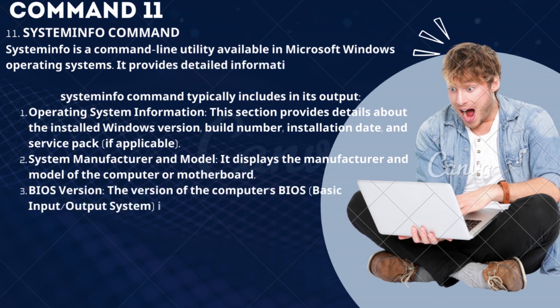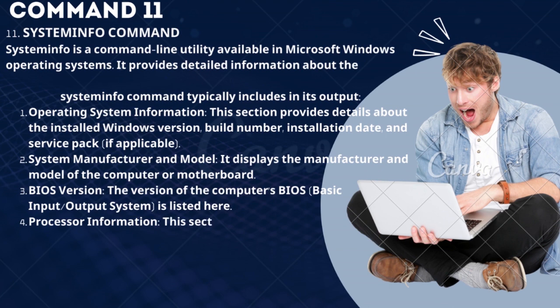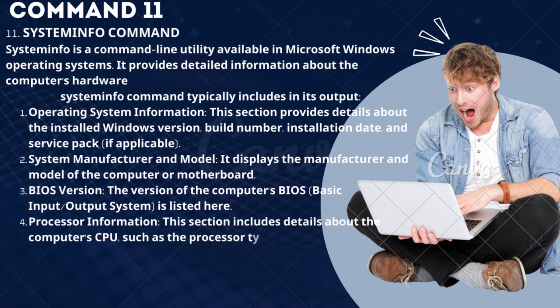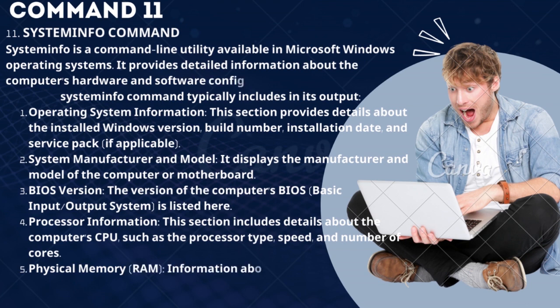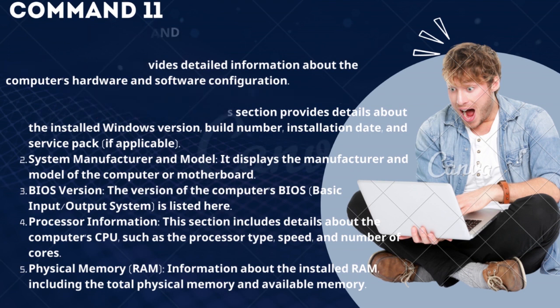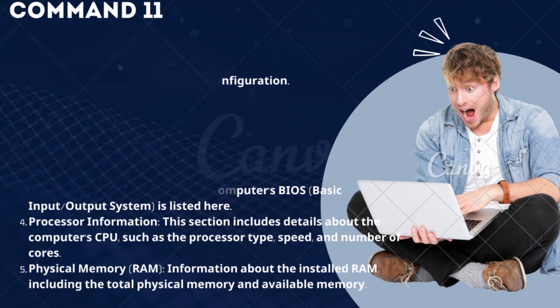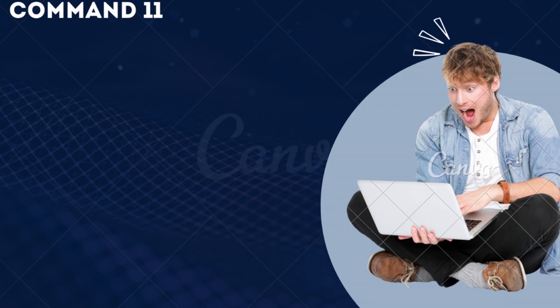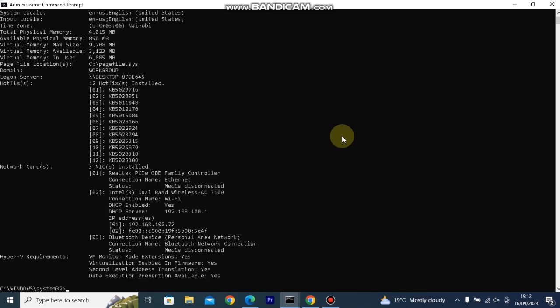System Info output typically includes: Operating system information such as the installed Windows version, build number, installation date, and service pack; System manufacturer and model; BIOS version; Processor information including CPU type, speed, and number of cores; and Physical memory (RAM) details including total physical memory and available memory.